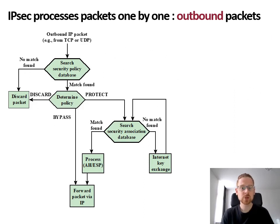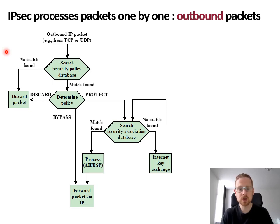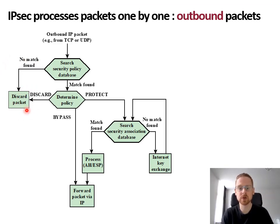This figure shows how outbound packets are processed by IPsec. Packets are processed one by one. When a new packet is received from the upper layers, the Security Policy Database is searched for a matching policy based on header fields such as the IP source and destination address. If no match is found, the packet is discarded and not transmitted. If a match is found, the policy is determined. There are three types of policies: the packet can be discarded, it can bypass IPsec, or it can be protected. If discarded, it is not transmitted. If the policy is to bypass IPsec, the packet is forwarded as a regular IP packet without any additional security.